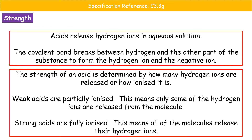The second term is about strength. Acids release hydrogen ions in solution — a covalent bond breaks between the hydrogen and the rest of the substance. Depending on how many hydrogen ions are released, that tells us the strength, or how ionized it is. Weak acids are only partially ionized — only some hydrogen ions are released. Strong acids are fully ionized — all hydrogen ions have been released.